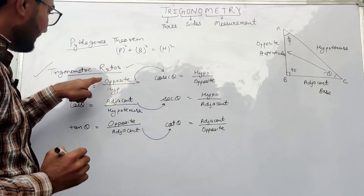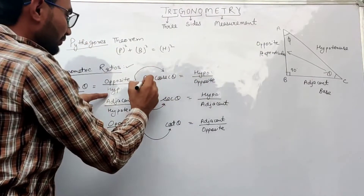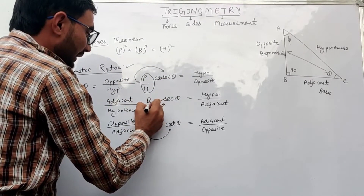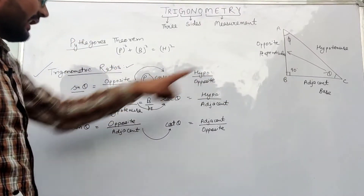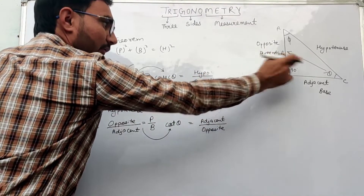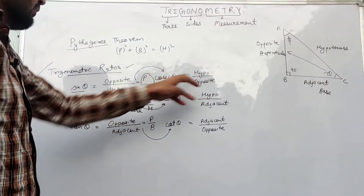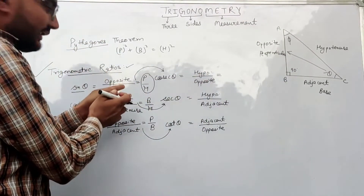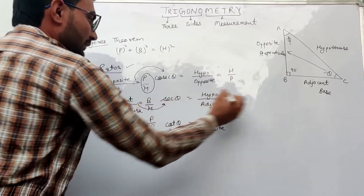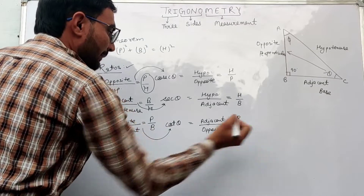Sin theta can be written as P upon H, where P means perpendicular and H means hypotenuse. Cos theta equals B upon H, where the adjacent side is base and H is hypotenuse. Tan theta equals perpendicular upon base — perpendicular is opposite to theta and base is the adjacent side. Cosecant theta equals hypotenuse upon perpendicular, secant theta equals hypotenuse upon base, and cotangent theta equals base upon perpendicular.